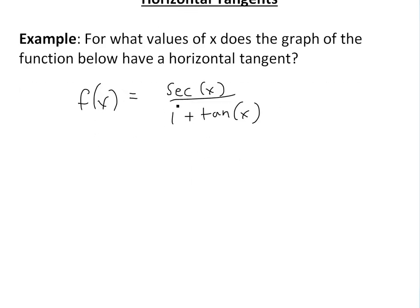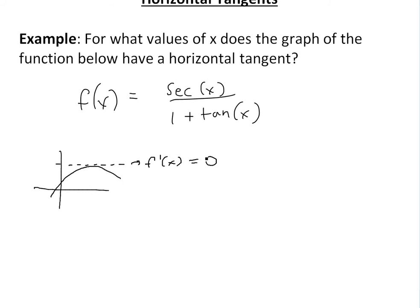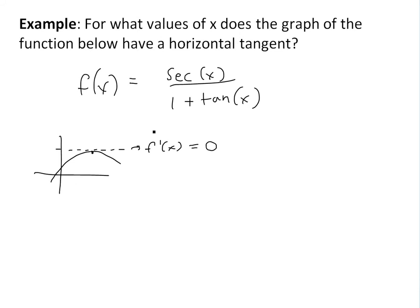Basically, if f of x equals secant of x all divided by 1 plus tan of x, we want to know which values of x give a horizontal tangent. A horizontal tangent would just be something like a flat line, and the derivative would be 0 at that point. Remember, derivatives are rise over run, so the derivative equals 0 at a horizontal tangent.